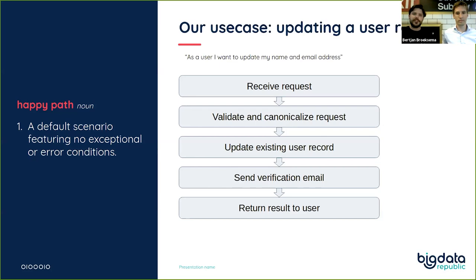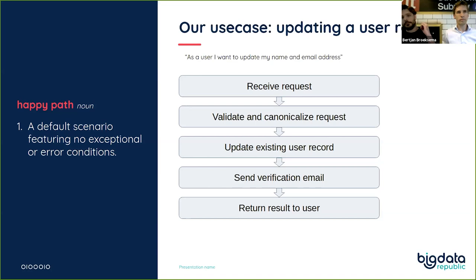Any presentation like this should focus on what kind of application we're going to build. It's more of a web app type deal, but the concept still relates well to data science. The use case is just updating a user record. A user makes a request to our API — we receive it, validate it, make sure the email is valid and in a format we can understand, update the record in the database, send an email, and return some result to the user.